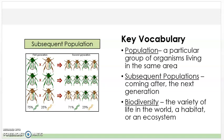The first term is population. A population is a particular group of organisms living in the same area. Subsequent populations are the ones coming after the next generation.